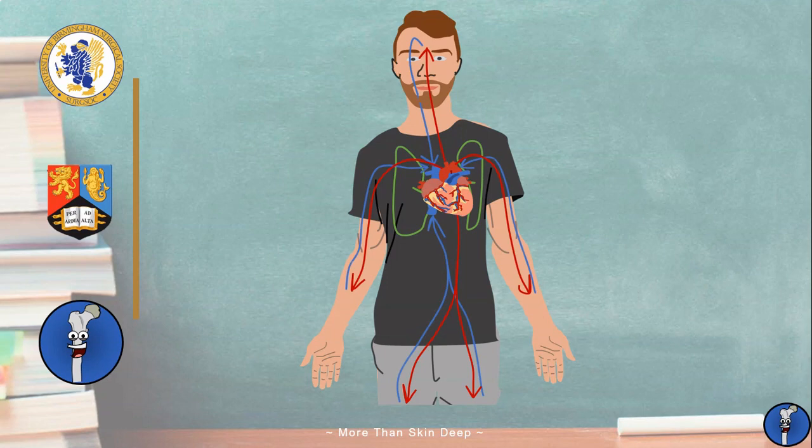These loops are part of a closed circulatory system whereby blood is contained within highly specialized vessels that make sure it travels to and from its destination in an efficient manner.